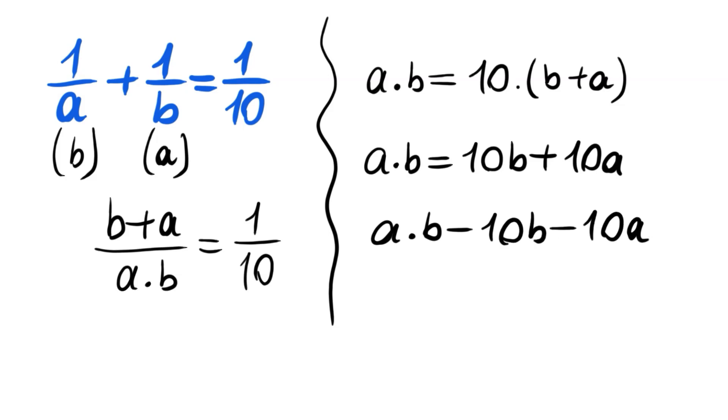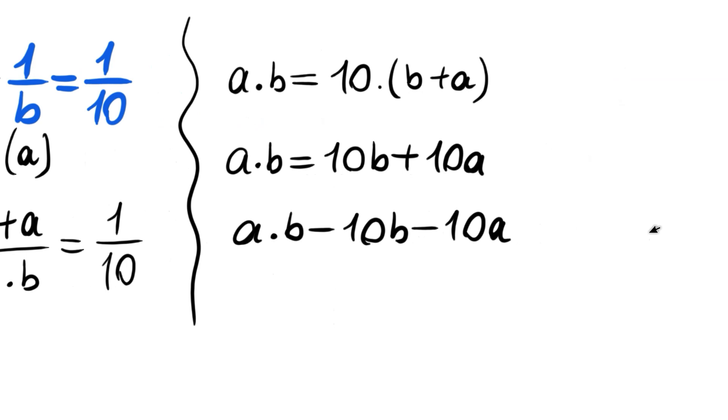Now here comes the trick for such equations, my friends. Grouping these two, we will have b times a minus 10. And here we can only group minus 10, let's do that.